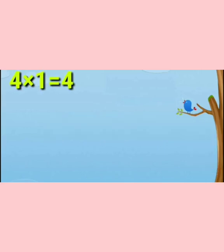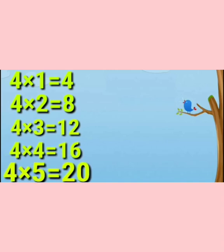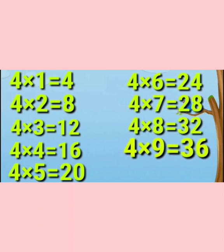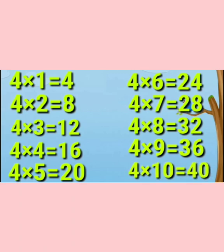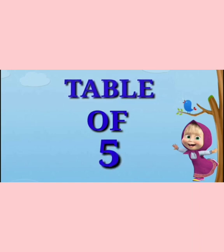Now repeat: 4 ones are 4, 4 twos are 8, 4 threes are 12, 4 fours are 16, 4 fives are 20, 4 sixes are 24, 4 sevens are 28, 4 eights are 32, 4 nines are 36, 4 tens are 40. Next table is table of 5.